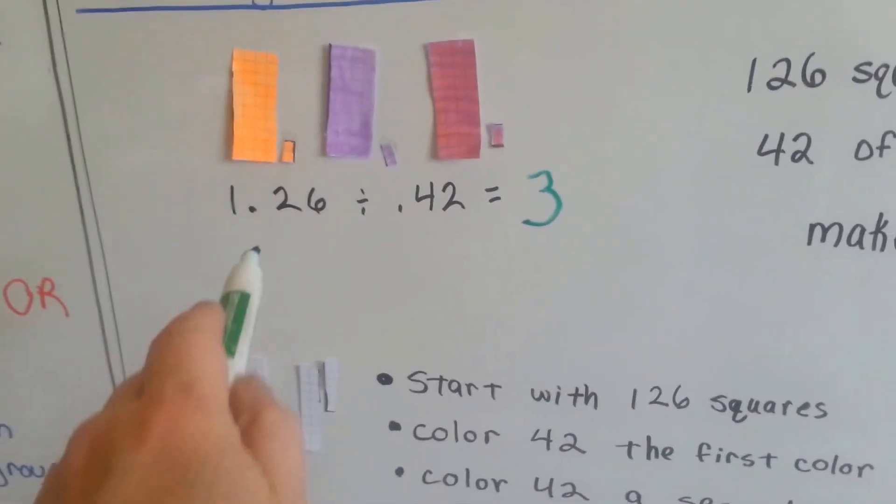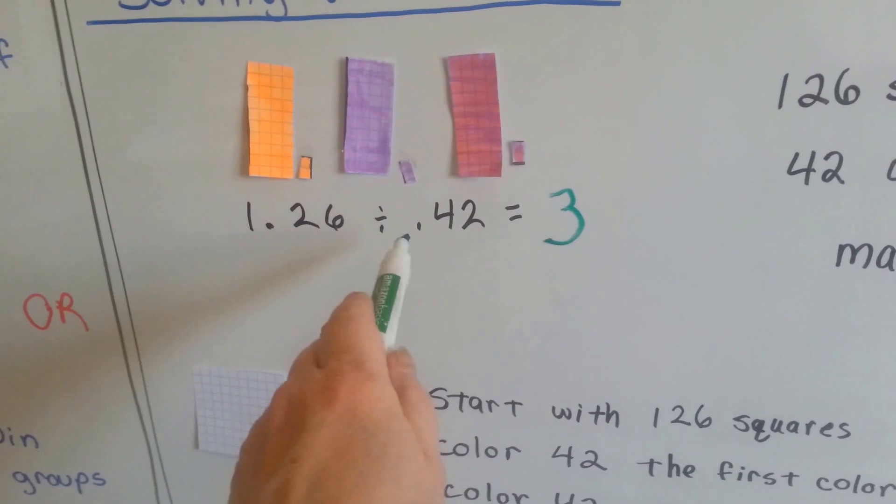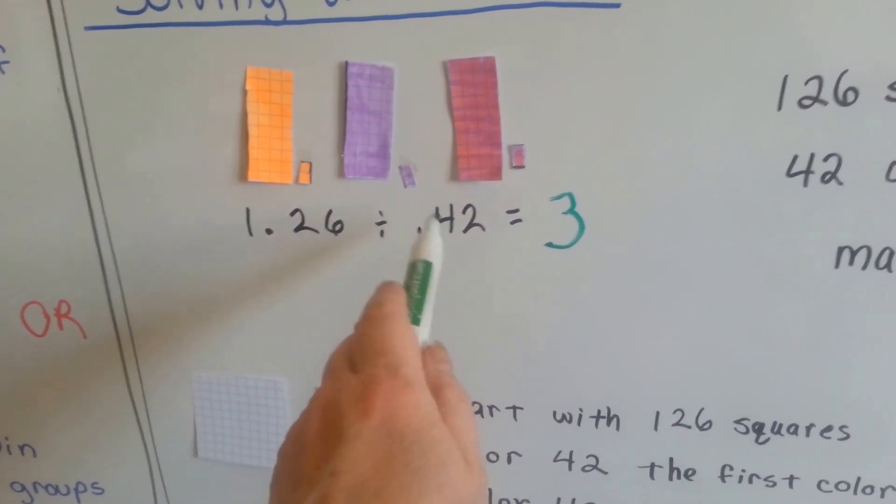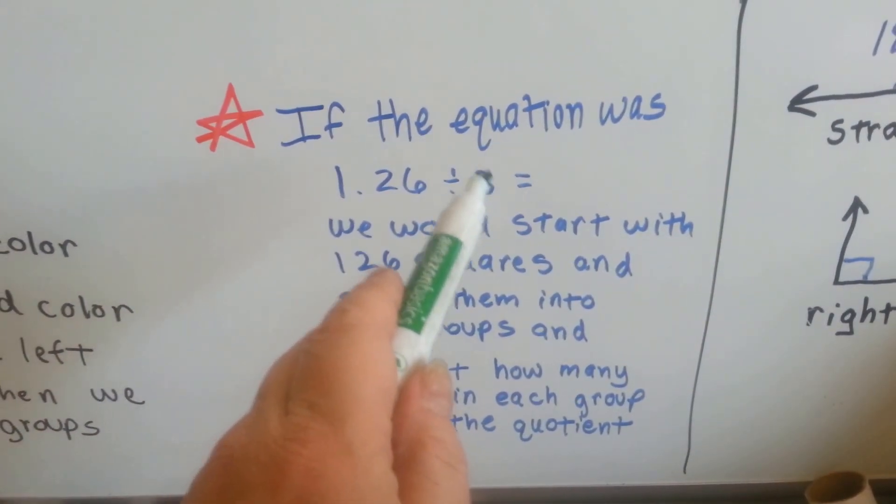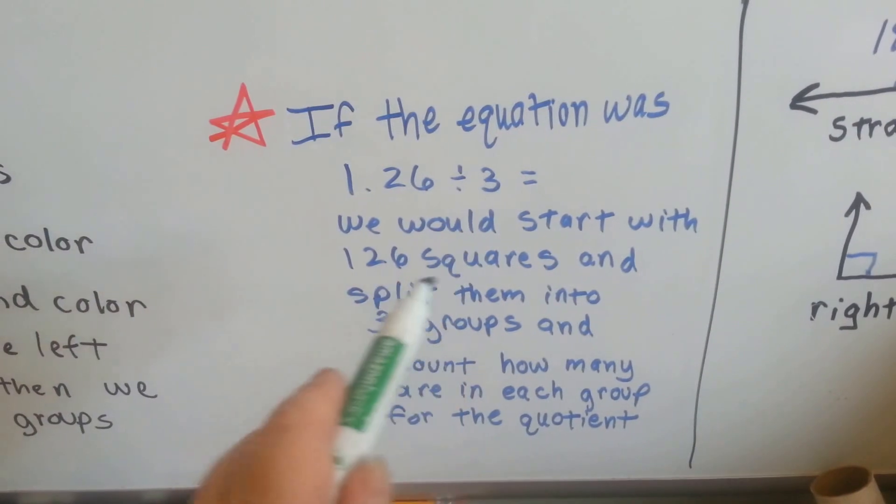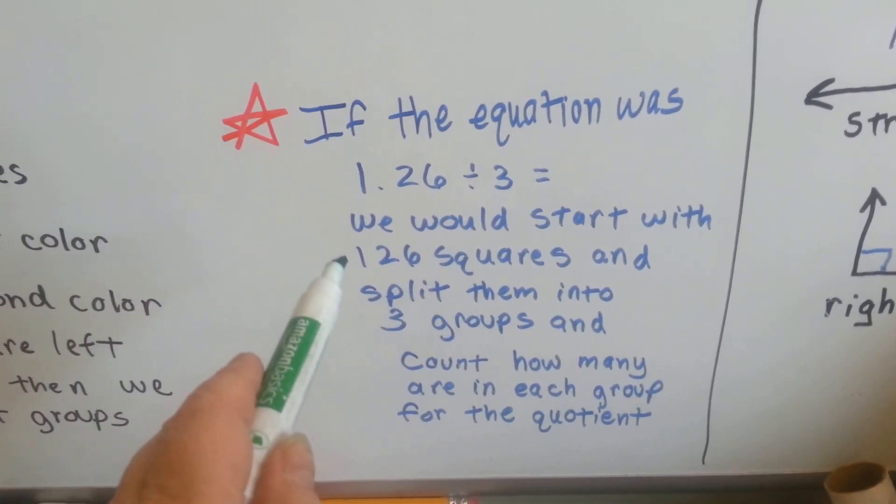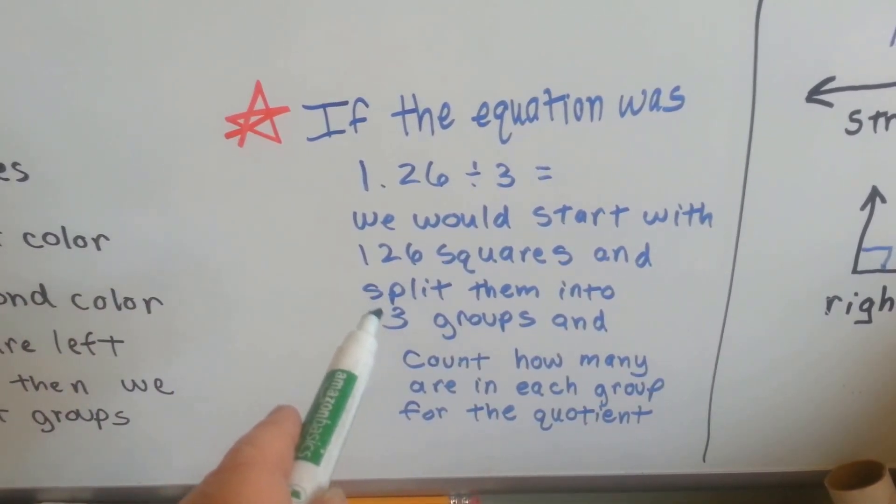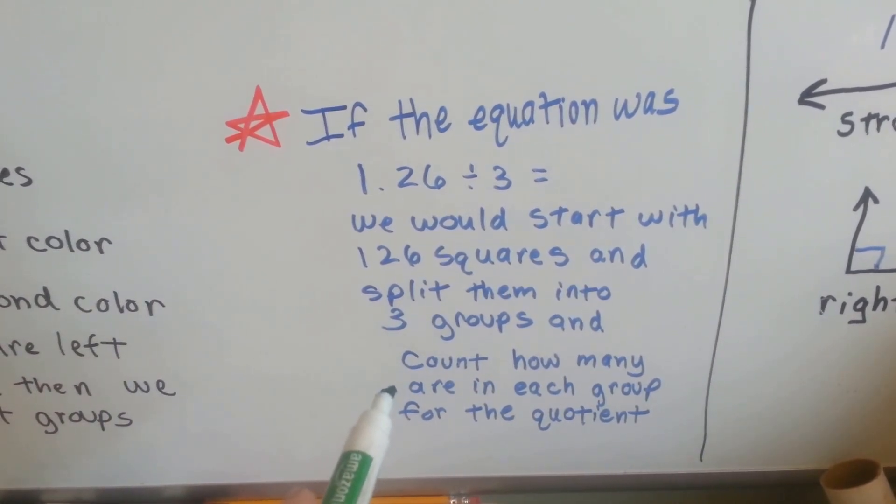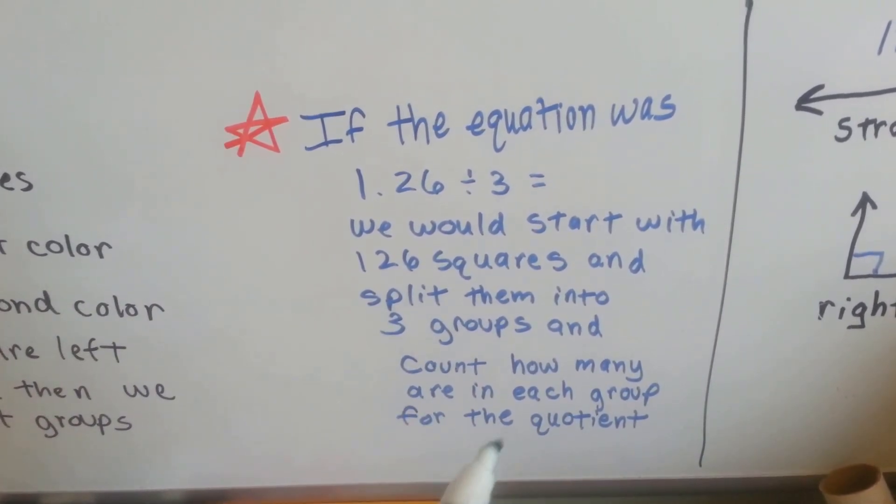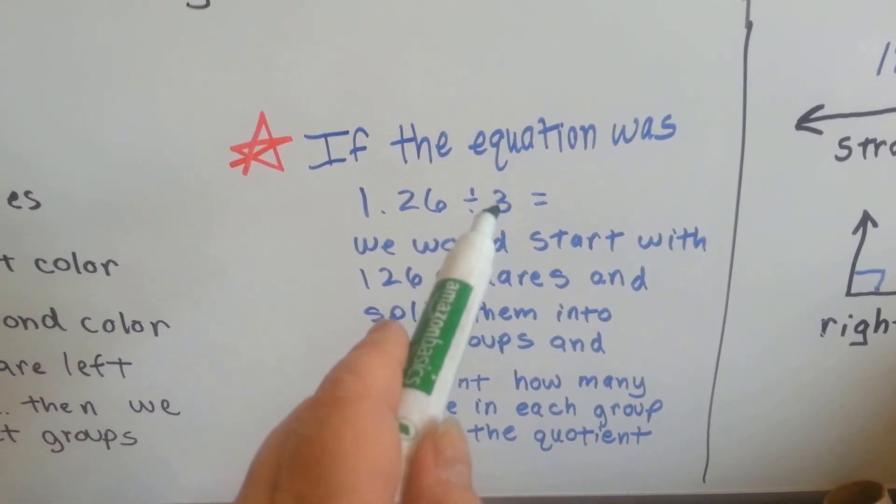Now pay attention to how this says it's divided by 42 hundredths. What if we changed the divisor so that the equation said it was divided by three? So now our divisor is telling us something else. We would start with 126 squares and split them immediately into three groups. Then we would count how many are in each of those groups, and we would get our quotient.